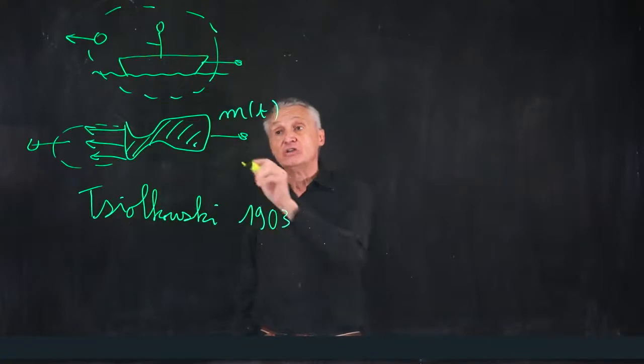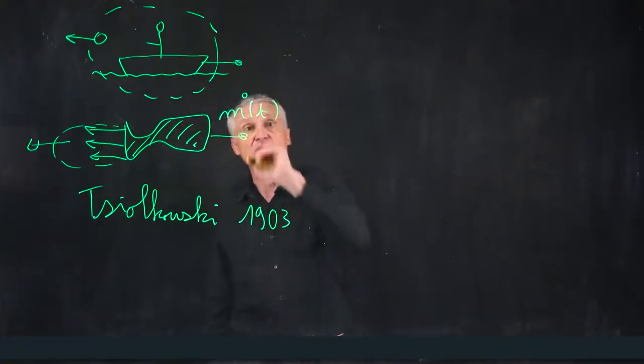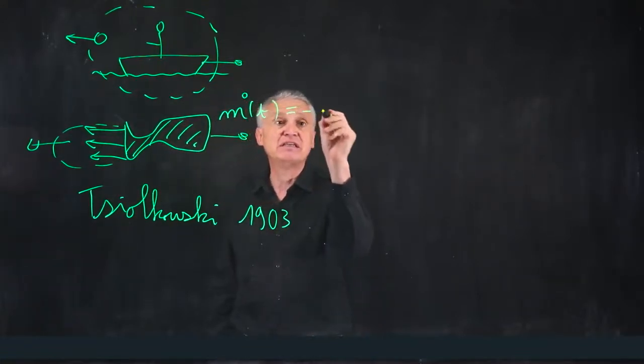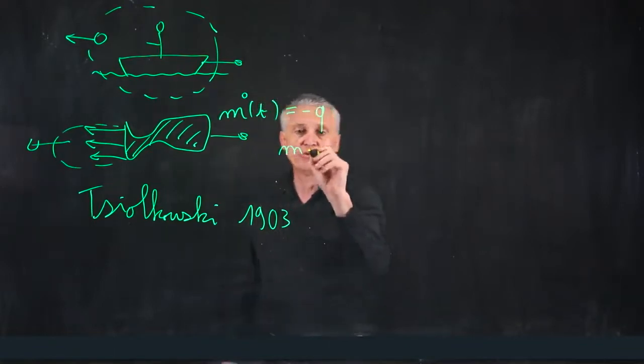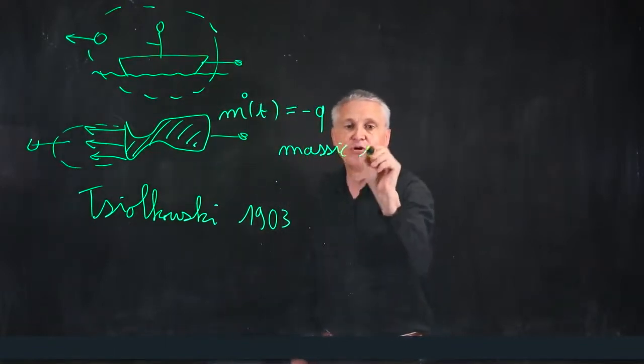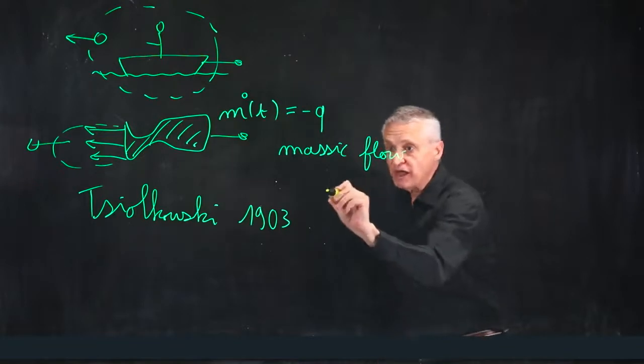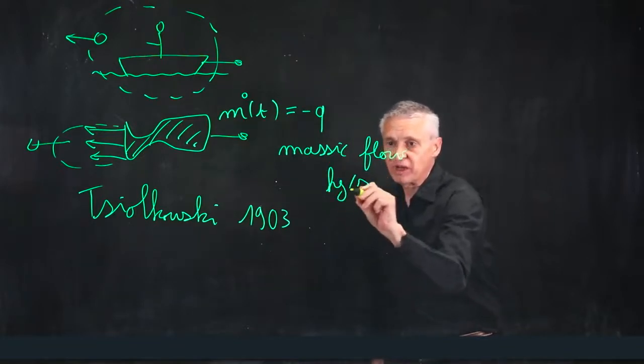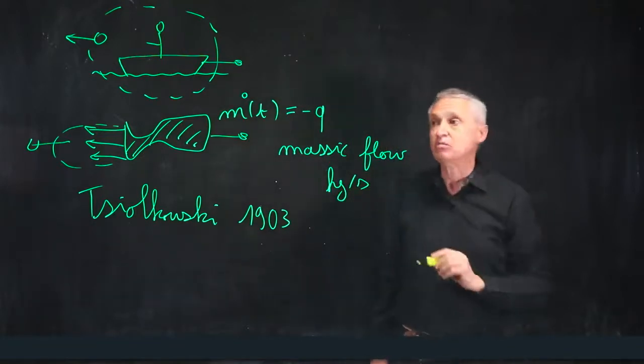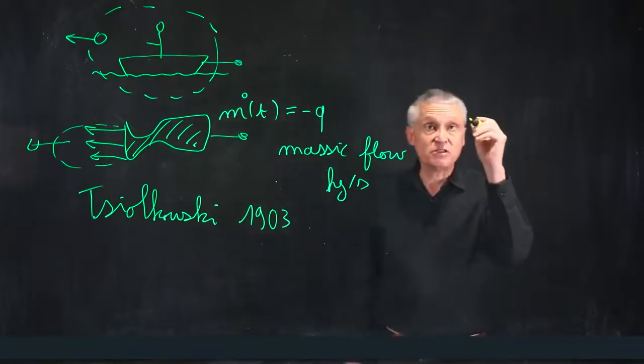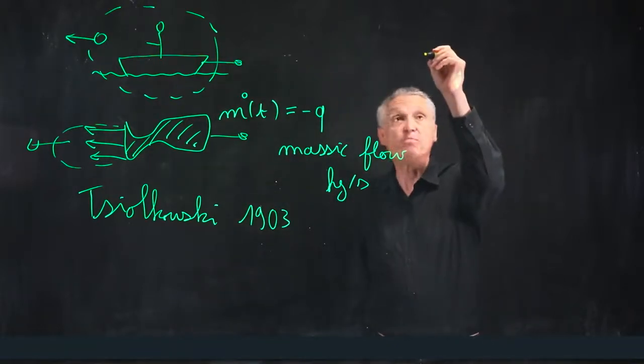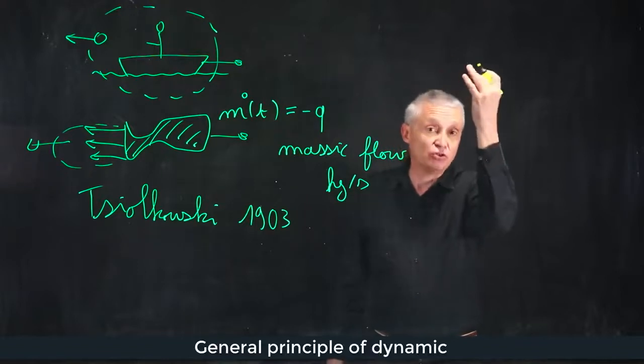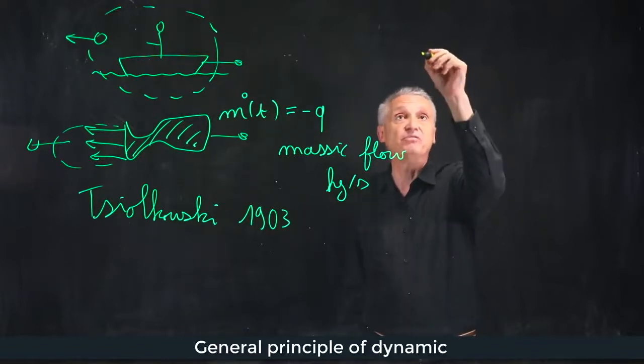So, the mass of the rocket is varying. And in time, it is exactly what is called the massic flow, which is a number of kilograms per second lost by the rocket. And then, Mr. Tsiolkovsky applied the principle of Newton, the general principle of dynamic.